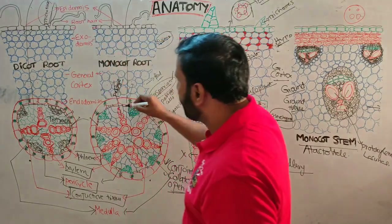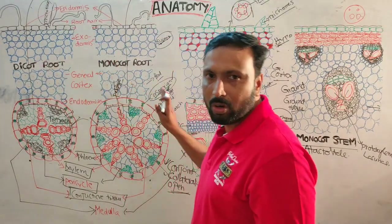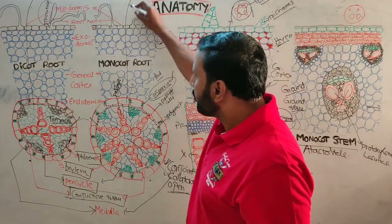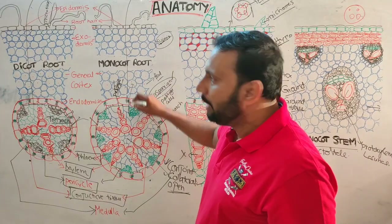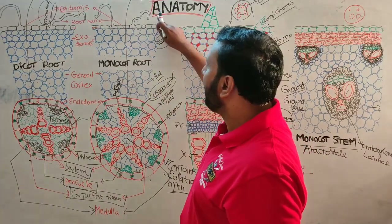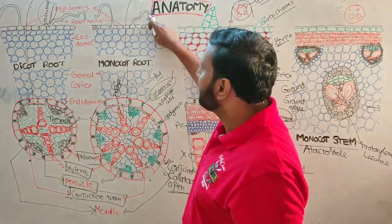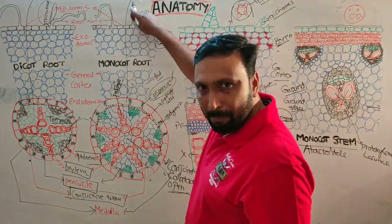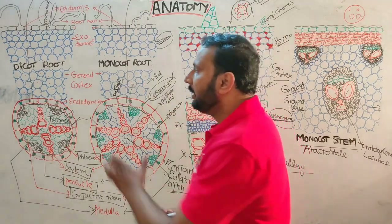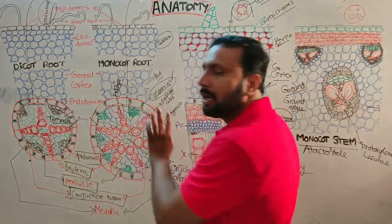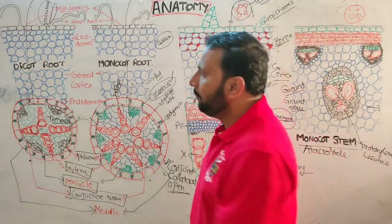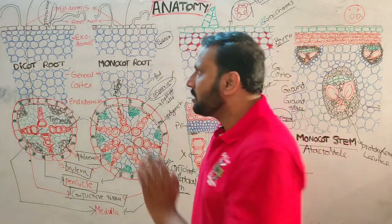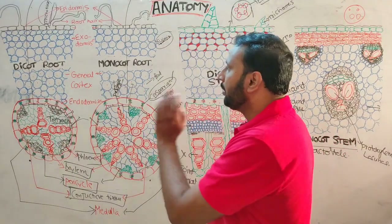The stele is surrounded by a layer called the pericycle, which forms lateral roots in both dicot and monocot roots. The origin of lateral roots is endogenous and multicellular, while root hairs are exogenous and unicellular. In dicot roots, the pericycle acts as cambium during secondary growth, so secondary growth is seen in dicot roots but not in monocot roots.